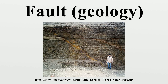The fault strain occurs accumulatively or instantaneously. Depending on the rheology of the rock, the ductile lower crust and mantle accumulates deformation gradually via shearing, whereas the brittle upper crust reacts by fracture and instantaneous stress release, to cause motion along the fault.